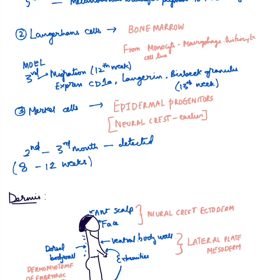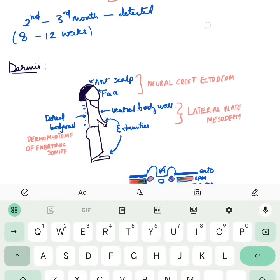Merkel cells are derived from epidermal progenitors. Earlier it was thought they derived from neural crest cells, and some say they derive from both neural crests and epidermal progenitors, but currently they are stated to derive from epidermal progenitors. They are detected by about the 8th to 12th week of embryonic life, are found in the basal layer of the epidermis, and express cytokeratin 20 and neuropeptides, with cytoplasmic dense core granules.